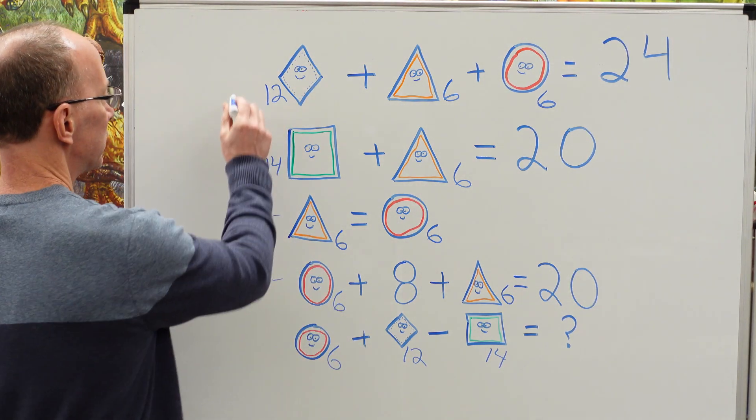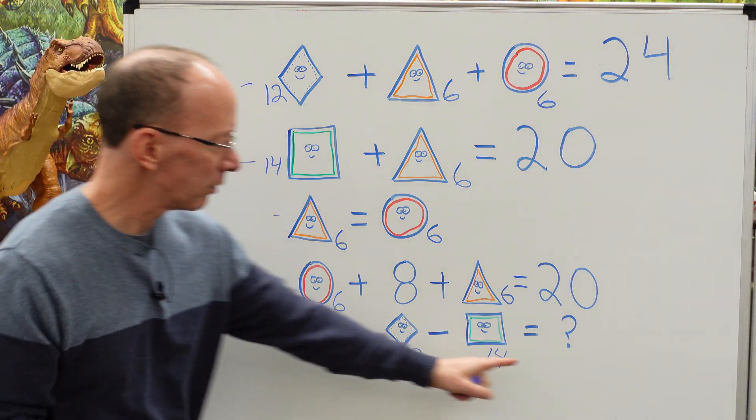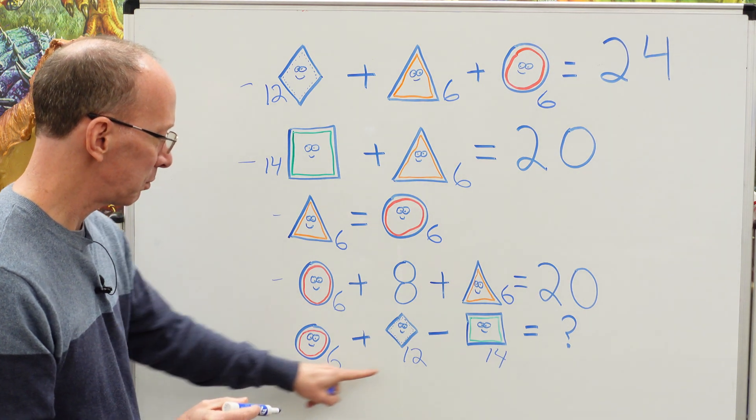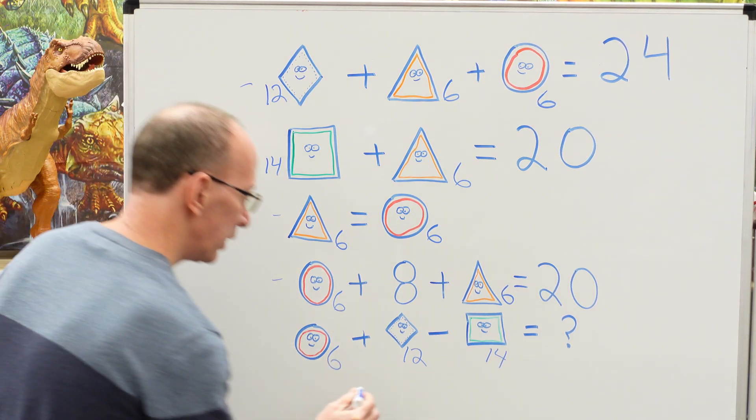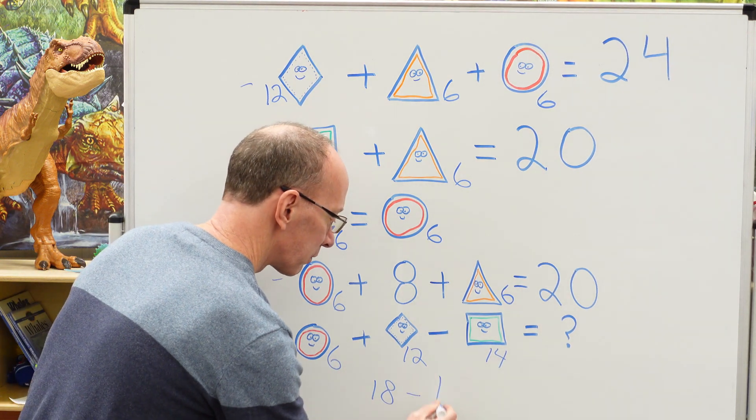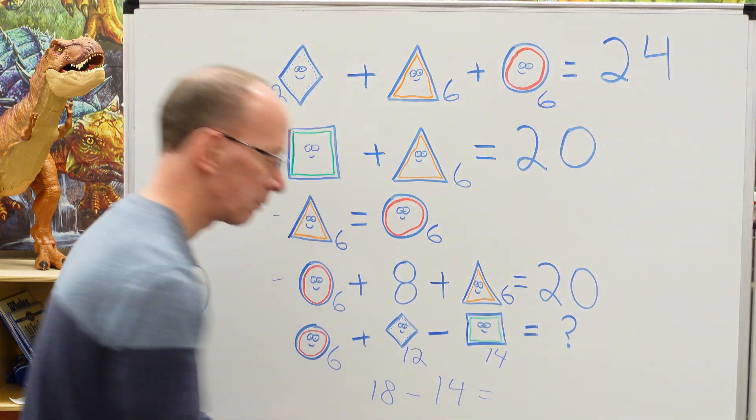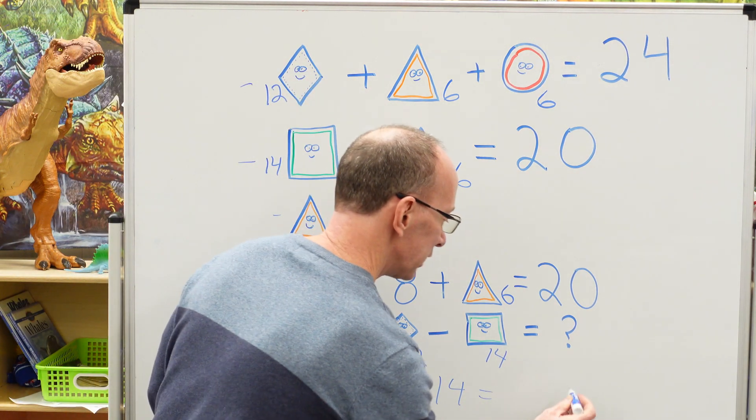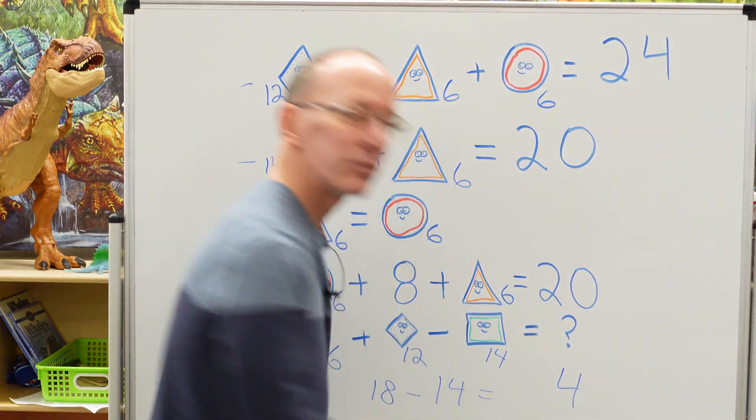And so I solved this one, and I solved this one. Now we're ready to solve the answer for this. So I have six plus 12, which would be 18 minus 14, four. So the answer is four.